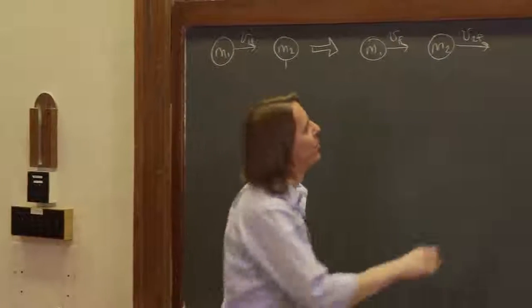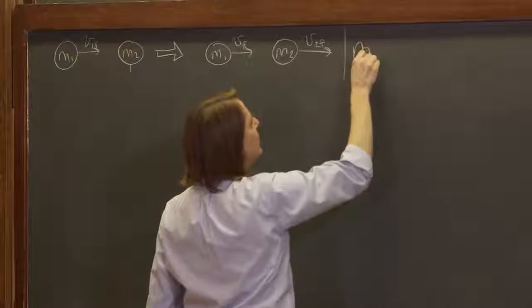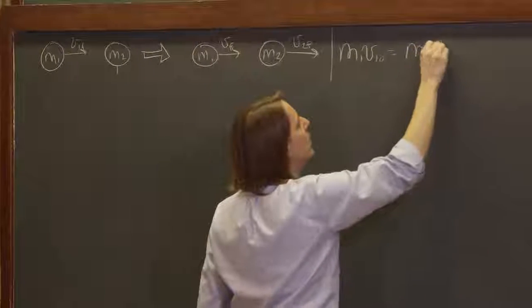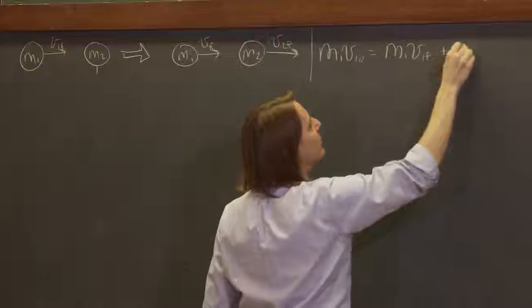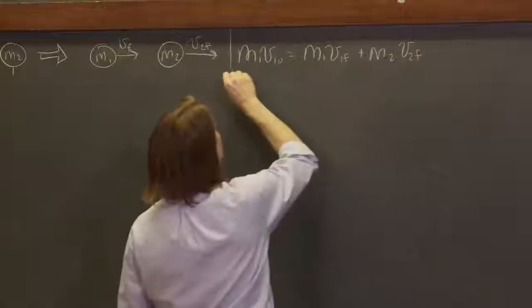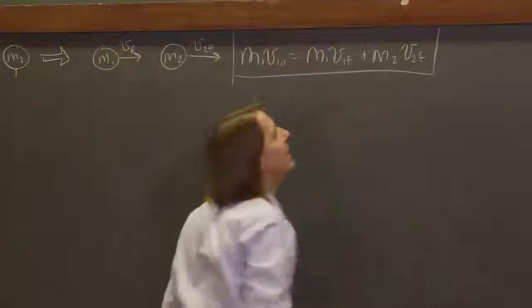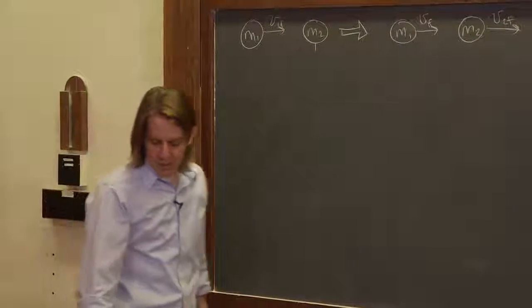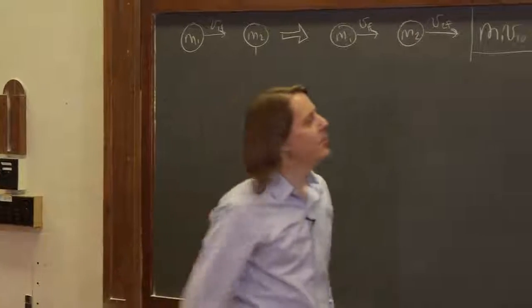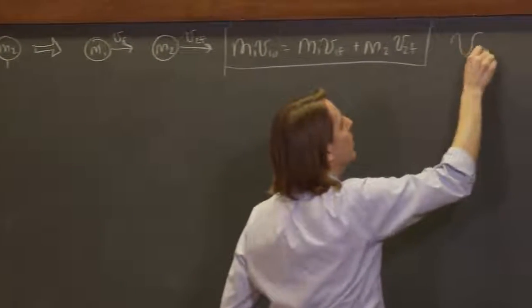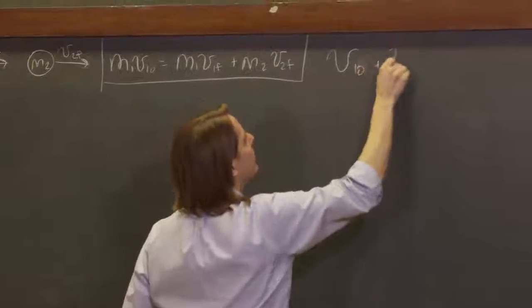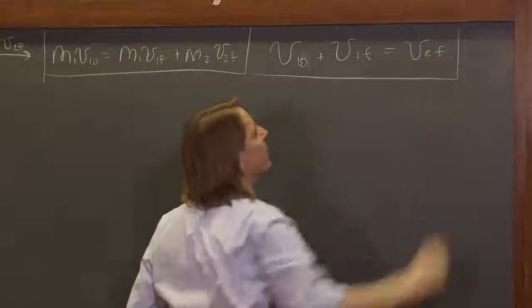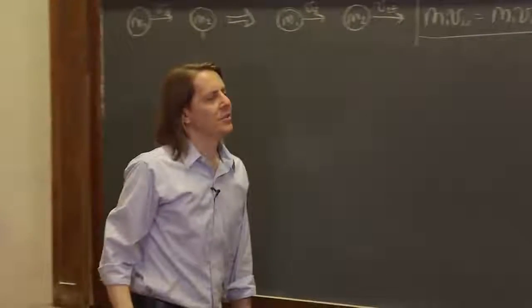We had it down to a couple of useful equations. We had conservation of momentum: m1·v1_initial = m1·v1f + m2·v2f. We manipulated that and got it in a better, non-squared linear form: v1_initial + v1f = v2f. We got that with a little algebra, and it makes everything much more solvable.